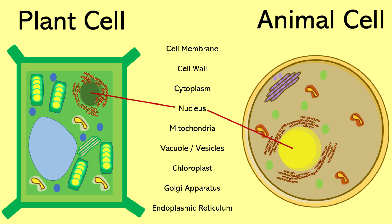This is the nucleus. It is the cell's control center, like the brain of the cell. It holds the instructions, or DNA, for everything the cell does. Here are the mitochondria. These are the powerhouses that give the cell energy.